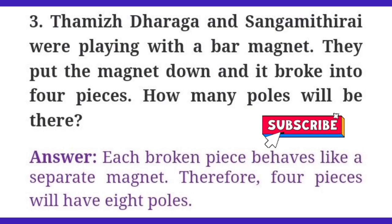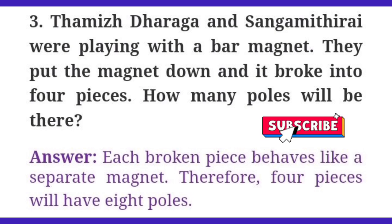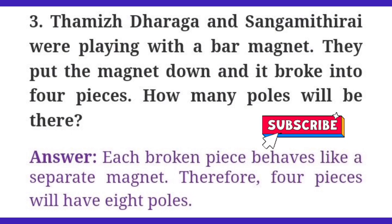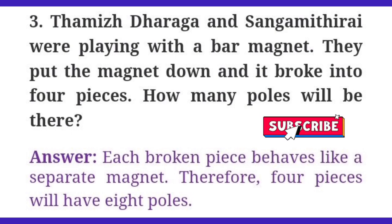Third question: Tamil, Taraga, and Sangamitirai were playing with a bar magnet. They put the magnet down and it broke into four pieces. How many poles will there be? Answer: each broken piece behaves like a separate magnet. Therefore, four pieces will have eight poles.